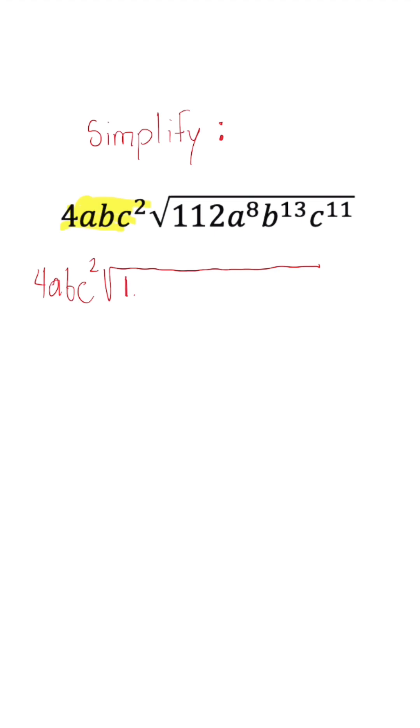So the coefficient, we could use 16 times 7. And then we use our variables, a to the eighth. And then when we have odd exponents, this is optional. What I like to do is separate them.